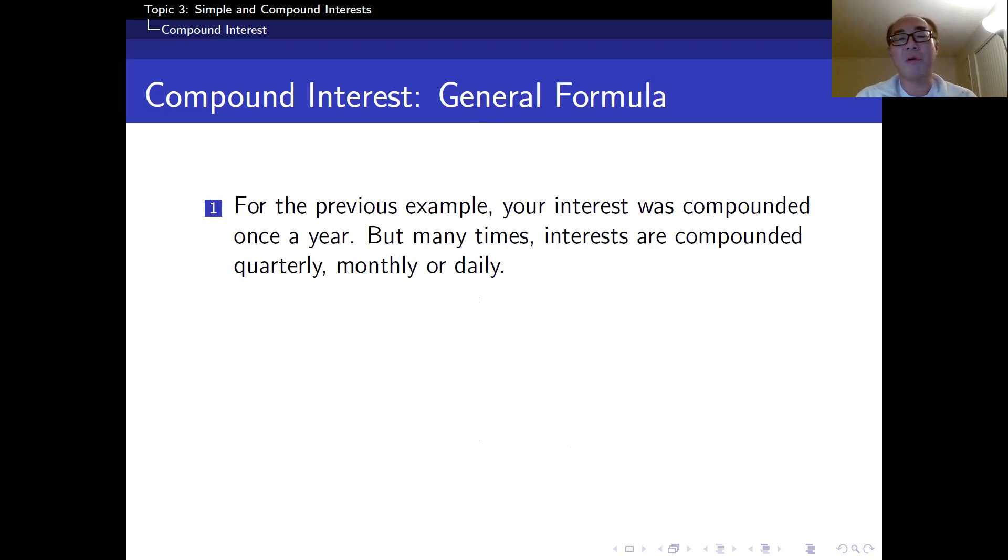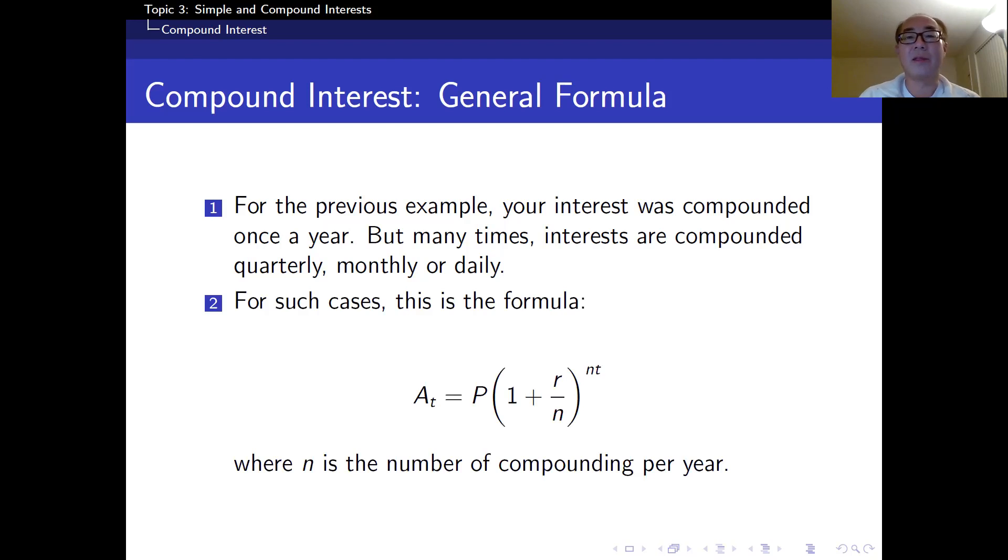For the previous example, your interest was compounded once a year. But many times, the interest are compounded quarterly, monthly, or daily. In that case, we're going to modify the formula that A sub T is equal to P times 1 plus... Now, R was the annual interest rate. So R is divided by the number of compounding. For the case of quarterly, that means that the year is divided into four equal parts. So N is equal to 4. For the quarterly, N is equal to 4. And as for monthly, because there are 12 months in a year, N is equal to 12. And for daily, obviously, we have 365 days a year. So N is equal to 365.